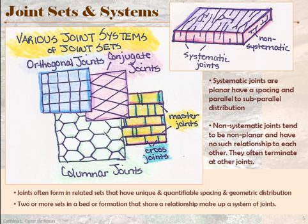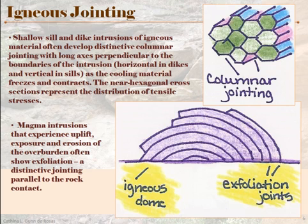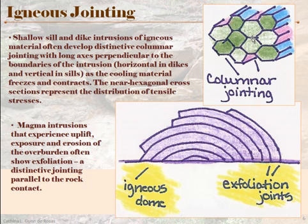Now we'll talk about specific types of igneous jointing. When sills and dikes intrude in the shallow crust, as they freeze they experience cooling and contracting that creates a tensile stress in the rock that is beginning to freeze and can no longer contract easily. Something called columnar jointing develops — in cross section you have a very close to hexagonal look, sometimes perfect hexagons, with a regular spacing representing the tensile stress field as it cools. Typically, the long axis runs down these columns perpendicular to the boundaries of the intrusion — a horizontal axis in dike intrusions and a vertical axis in sill intrusions.